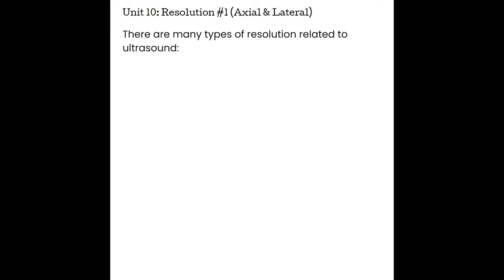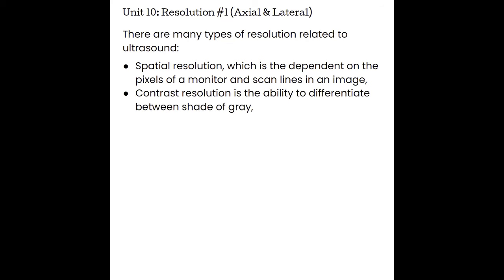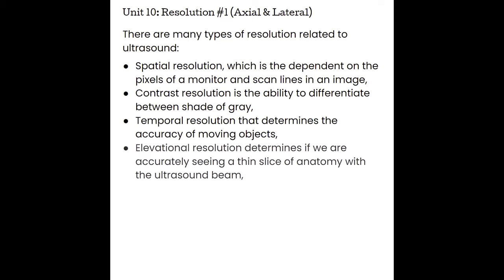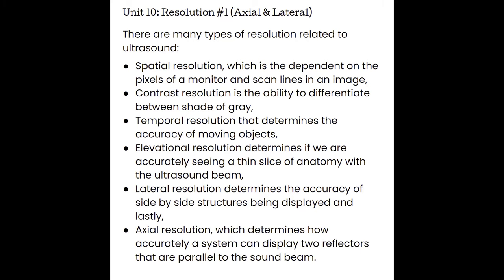There are many types of resolution related to ultrasound. We have spatial resolution, which is more dependent on the pixels of a monitor and scan lines in an image. We have contrast resolution, which is the ability to differentiate between the shades of gray. Temporal resolution determines the accuracy of moving objects. Elevational resolution determines if we are accurately seeing a thin slice of anatomy in the ultrasound beam. Lateral resolution determines the accuracy of side-by-side structures being displayed. And axial resolution determines how accurately a system can display two reflectors that are parallel to the sound beam.